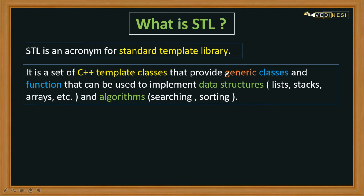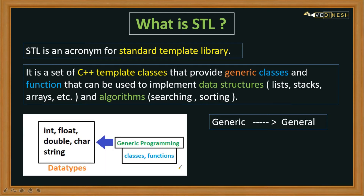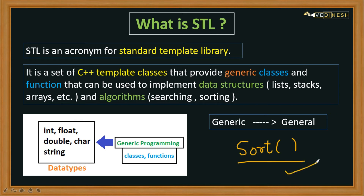STL provides generic classes and functions. Here, 'generic' means general. With the help of STL we can do generic programming — general programming with classes and functions. This means we can perform operations on our data irrespective of its type, whether it is integer, float, double, char, string, etc. For example, this sort function will not only work for a particular data type; it will work for all data types.